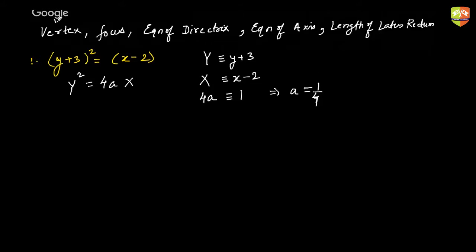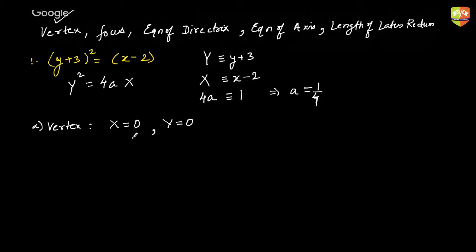First question is vertex. Vertex means capital X equal to 0 and capital Y equal to 0. So for vertex, you would put capital X as 0 and capital Y as 0 — that's indicative of the (0, 0) vertex. So x minus 2 is 0 and y plus 3 is 0, which means vertex would be at (2, −3).